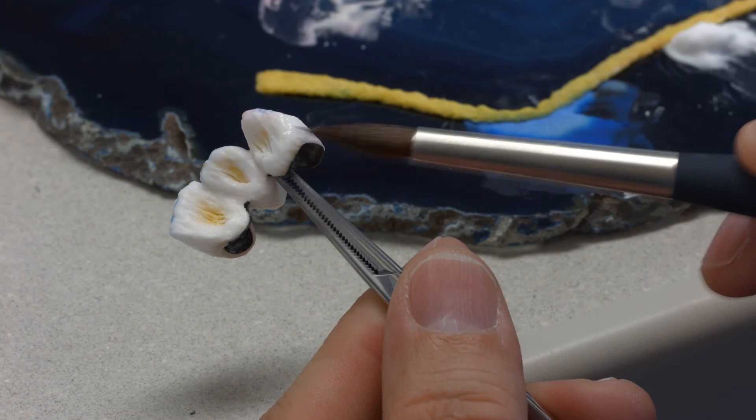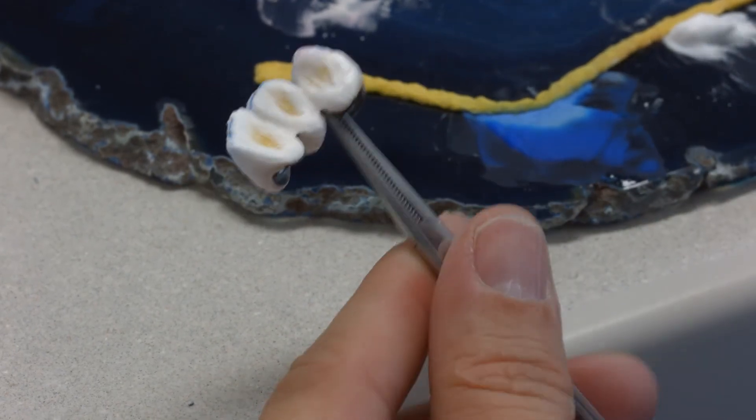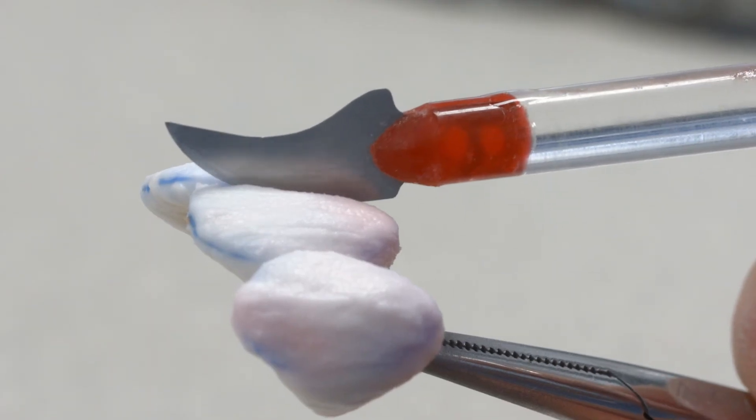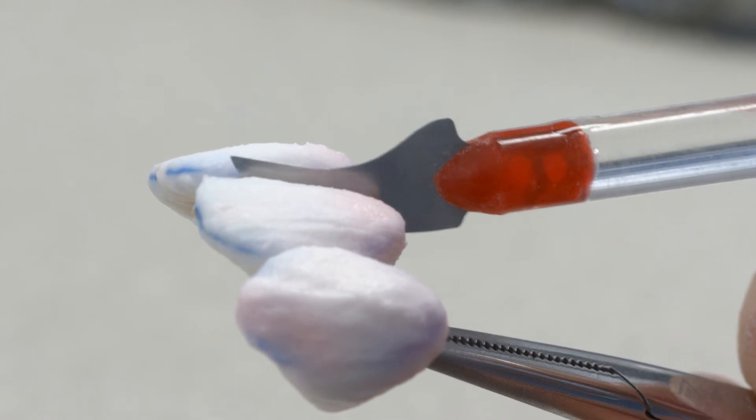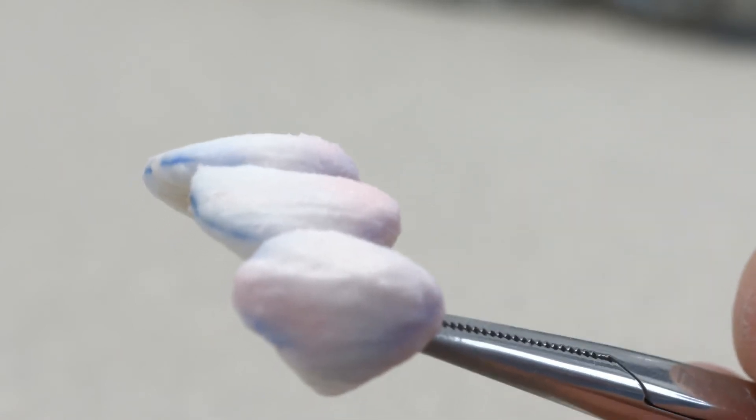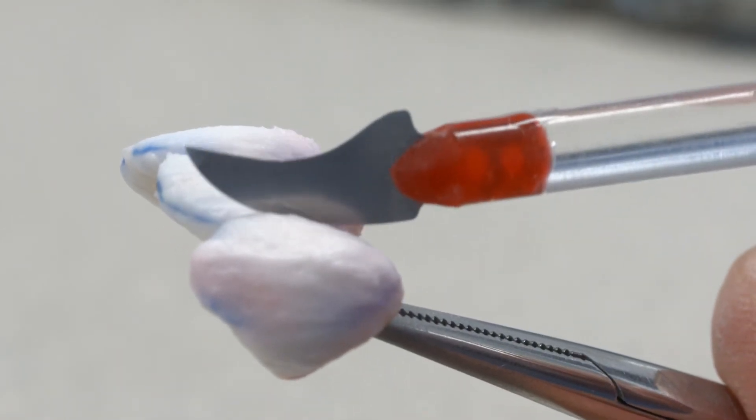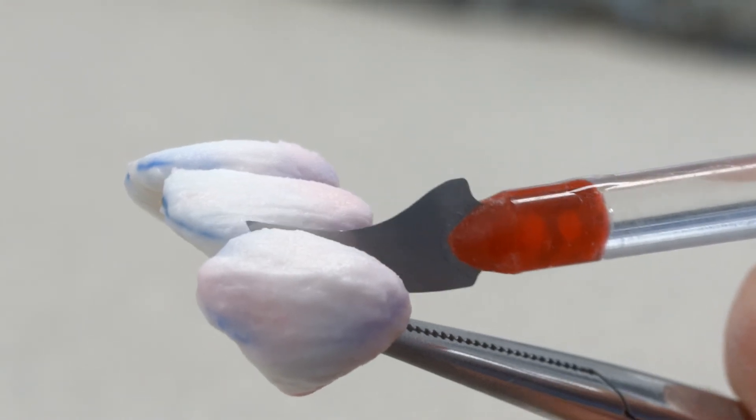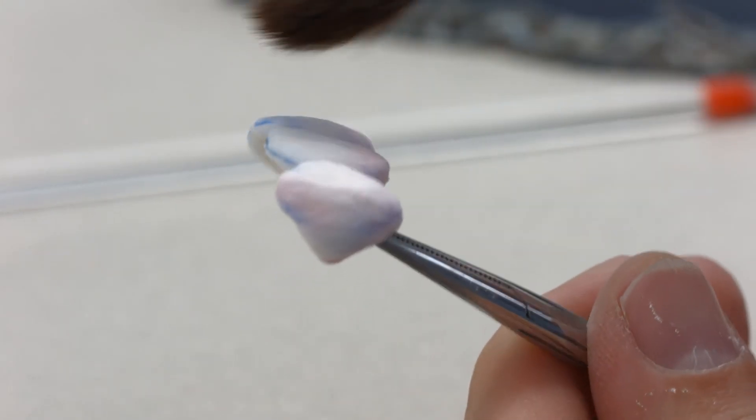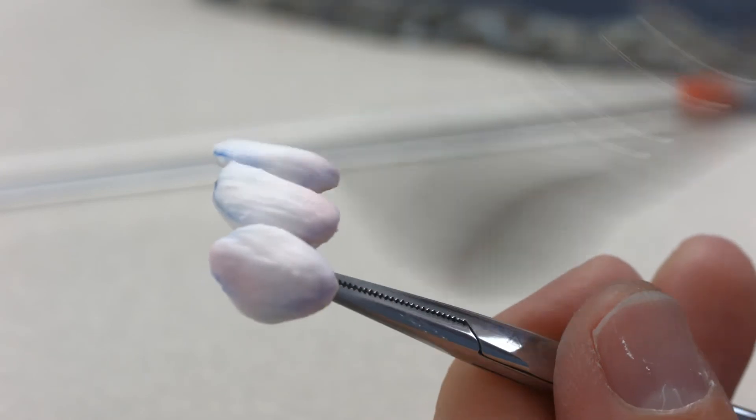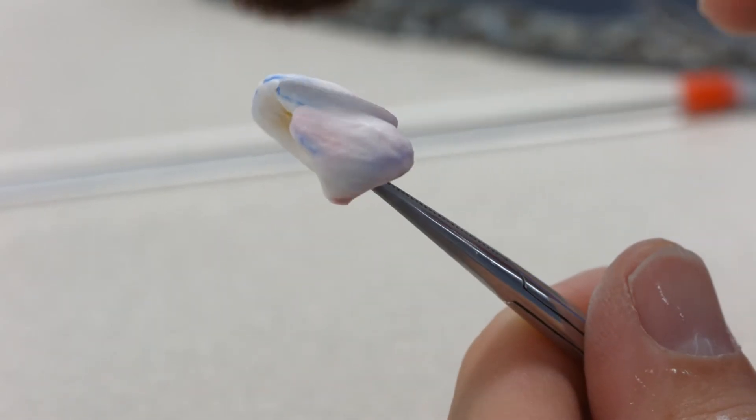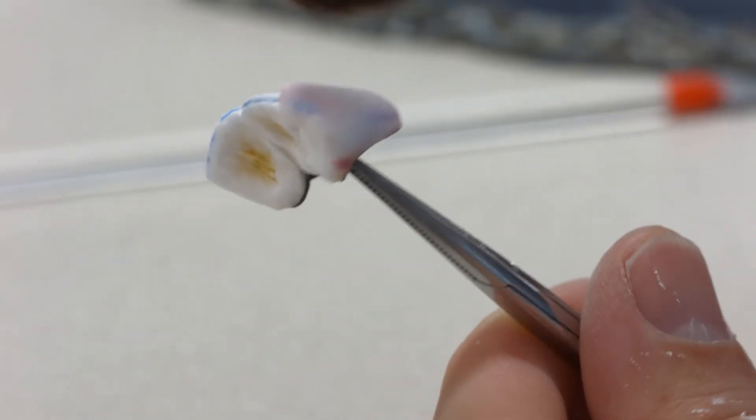Then, the contacts have to be adjusted with the corresponding layering materials. Before firing the restoration, it's important to cleanly separate the individual parts of the restoration by cutting through the interdental areas down to the opaquer. Furthermore, compact and smooth the ceramic surface in the direction of the cervical margin with a large dry brush.